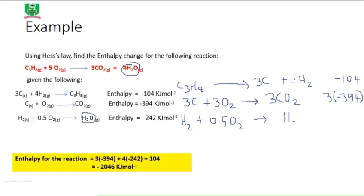Because the order of the reaction is not reversed — it is maintained — it means that the sign on its enthalpy will remain negative. So it will be minus 242 kilojoules per mole.